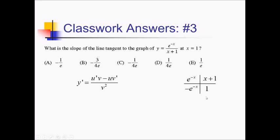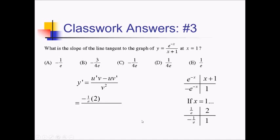Before I multiply things out with the ribbon, let me plug in 1 inside the box. Plugging in 1: e to the negative 1, which I can write as 1 over e. x plus 1 becomes 2. Down here the derivative term becomes negative 1 over e, and the other derivative is just 1. Multiplying things out with the ribbon: I've got negative 1 over e times 2, simplified to negative 2 over e, and then minus 1 over e times 1, all over 2 squared.